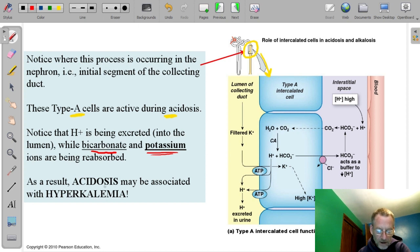So as a result of acidosis, a patient with acidosis may be associated with hyperkalemia because they're retaining the potassium along with the bicarbonate. So you want to watch for that, you want to try to remember that.